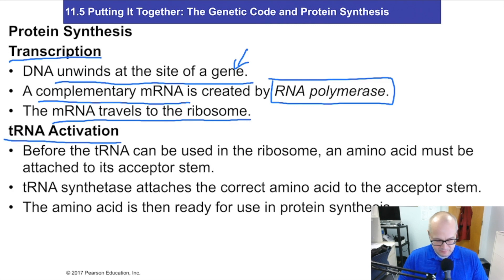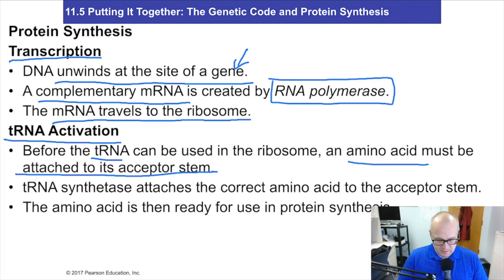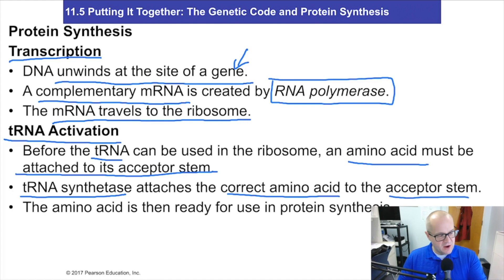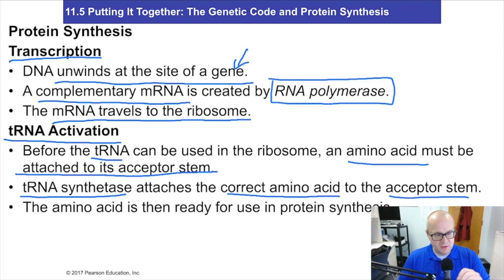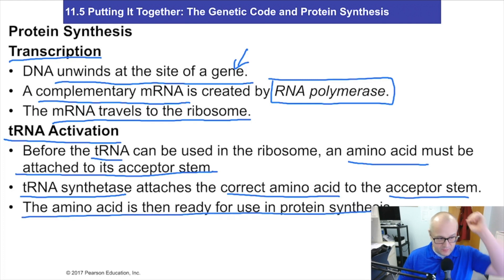tRNA activation: before tRNA can be used in the ribosome, an amino acid must be attached to it. tRNA synthetase attaches the correct amino acid to the acceptor stem. So you have a tRNA out there in the cell, and a tRNA molecule will be bonded to an amino acid using an enzyme known as tRNA synthetase. At this point, the tRNA loaded with an amino acid is ready for protein synthesis.